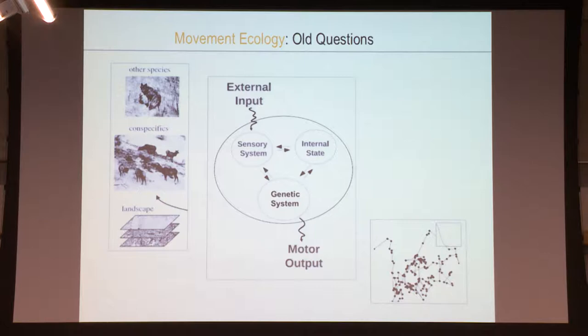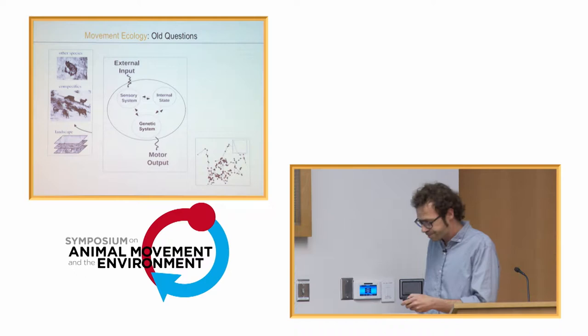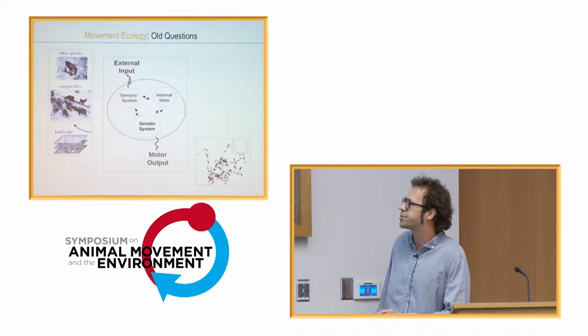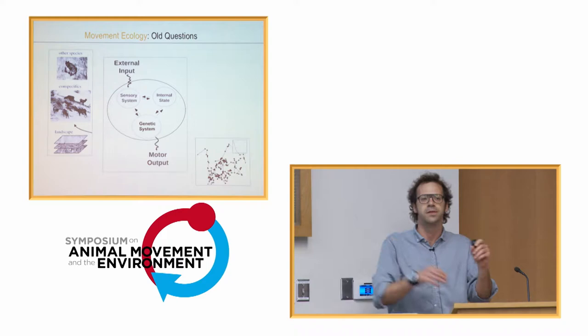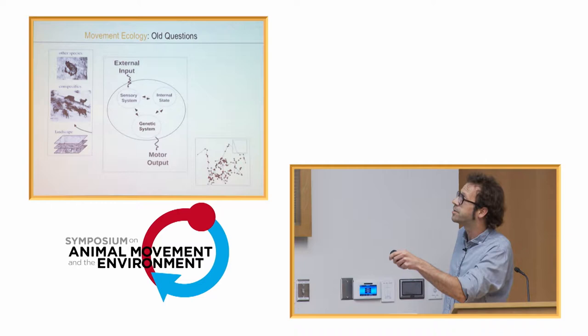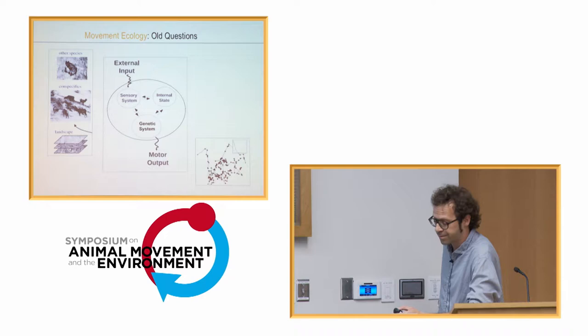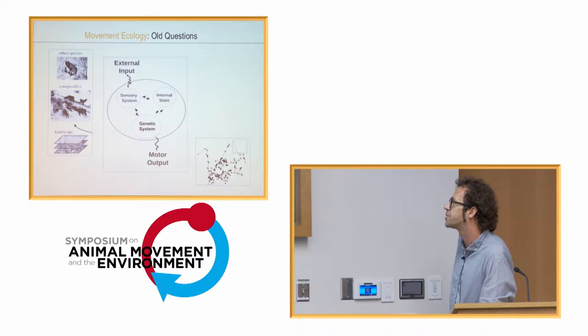We can think of an organism as a modeler — as elements that have components, including an internal system, a sensory system, and a genetic system. This is a simplification of one of those diagrams from the movement ecology special issue at PNAS, a simplified scheme where we have an external input — the environment, conspecifics, other species, the landscape itself — and this input enters the system and generates a motor output.